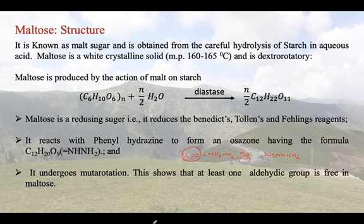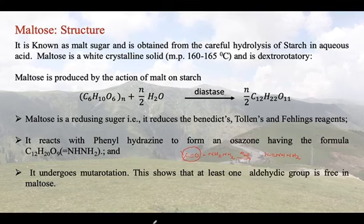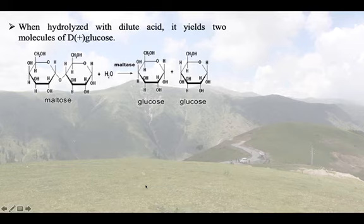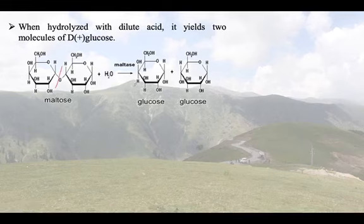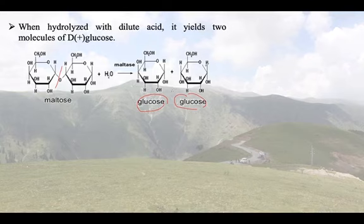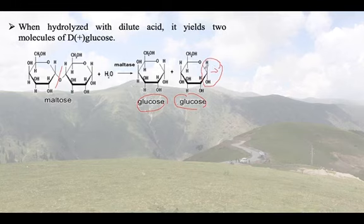Maltose undergoes mutarotation, which shows that at least one aldehydic group is free in the molecule. From all these properties we can say it has at least one free aldehyde group. When hydrolyzed with dilute acid, it yields two molecules of D-glucose. When we use the enzyme maltase for hydrolysis, it also gives us two molecules of glucose.